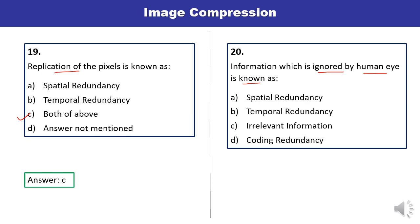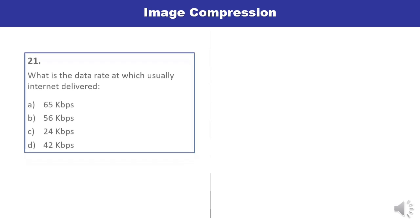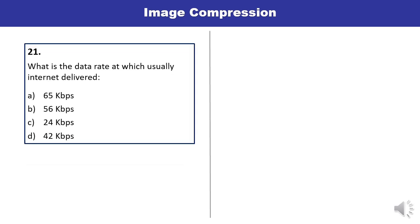Question 20: What is the data rate at which the internet is usually delivered? Four options are given: 65 kbps, 56 kbps, 24 kbps, and 42 kbps. So 56 kbps is actually the data rate. This is the correct answer.